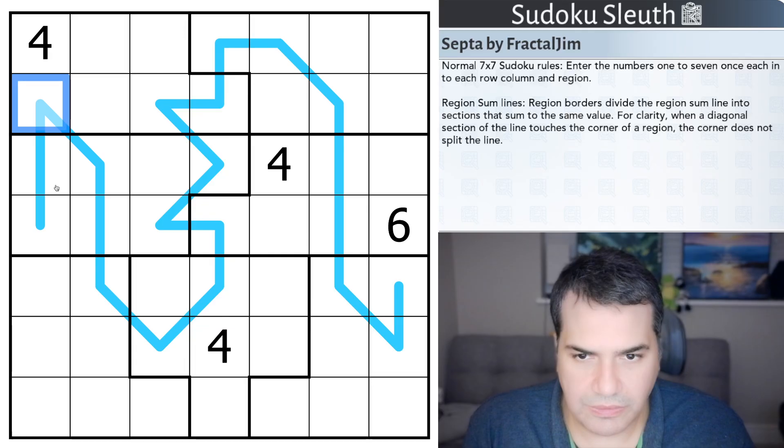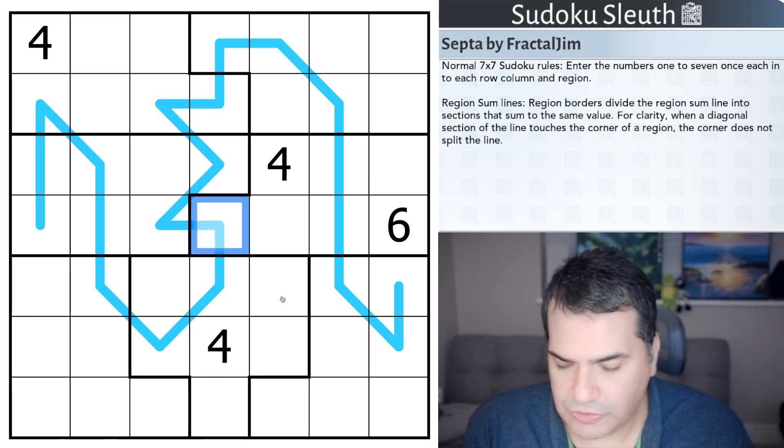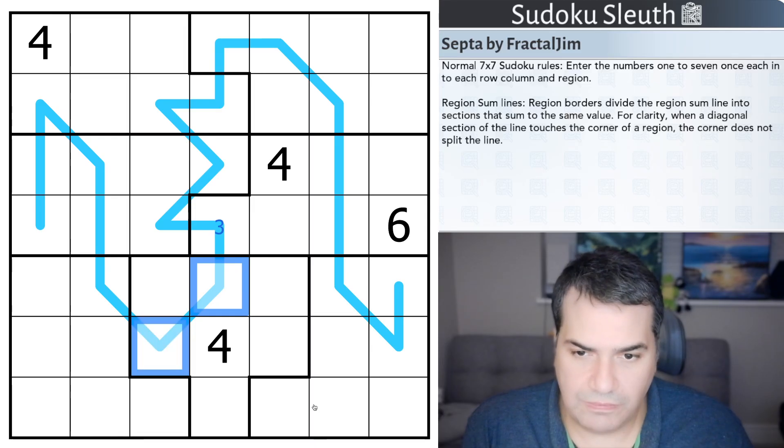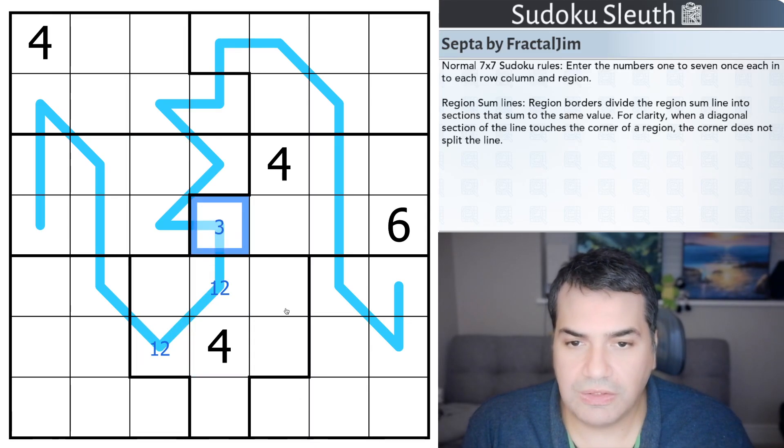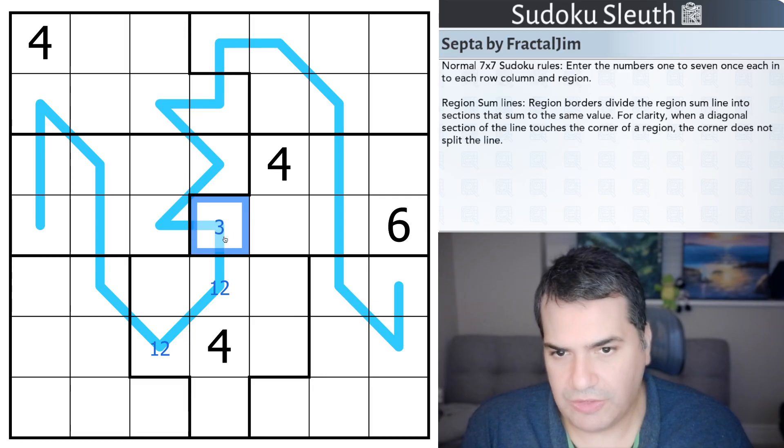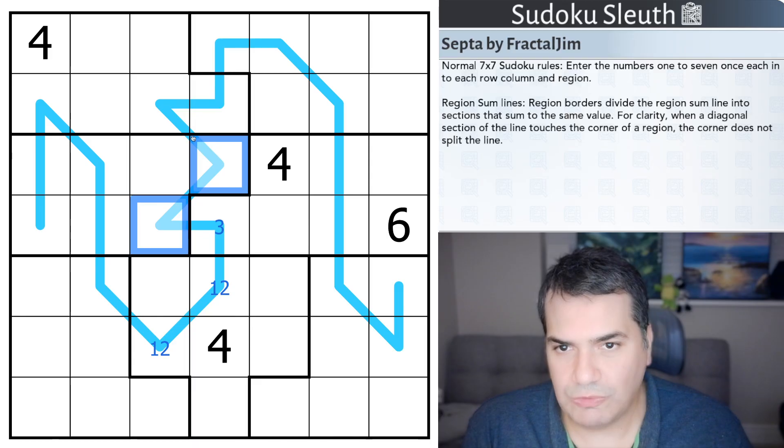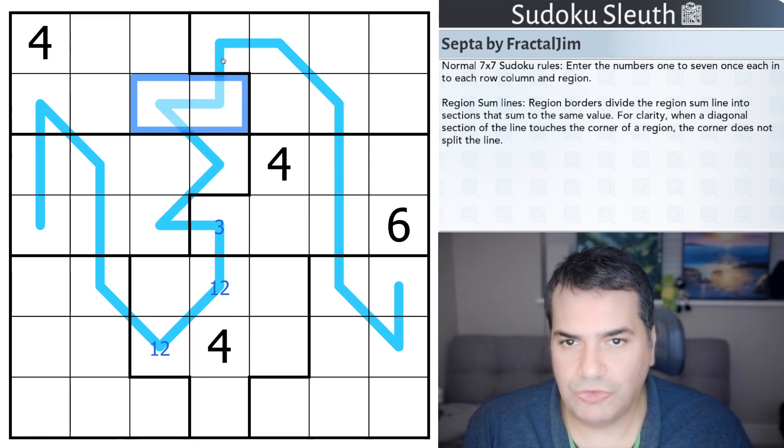For clarity, when a diagonal section of a line touches the corner of a region, the corner does not split the line. Right, I think I got what that means. So, let's imagine... I don't know. Let's go with... This is a bad place to... This is a bad place to... Yeah, let's try this cell. So, if this cell is 3, this section would have to essentially add up to 3 with these two cells.